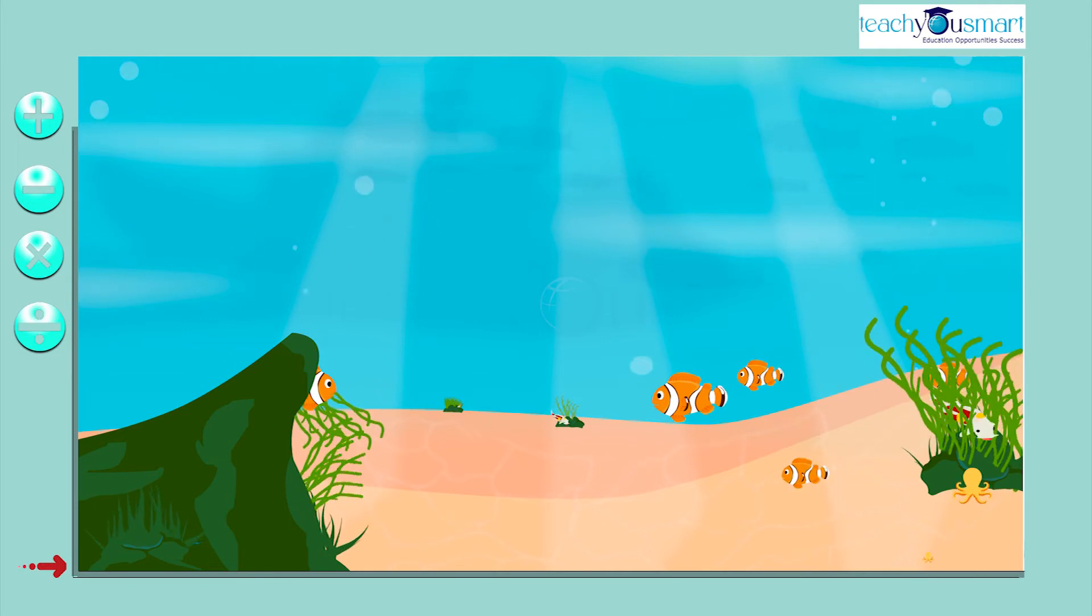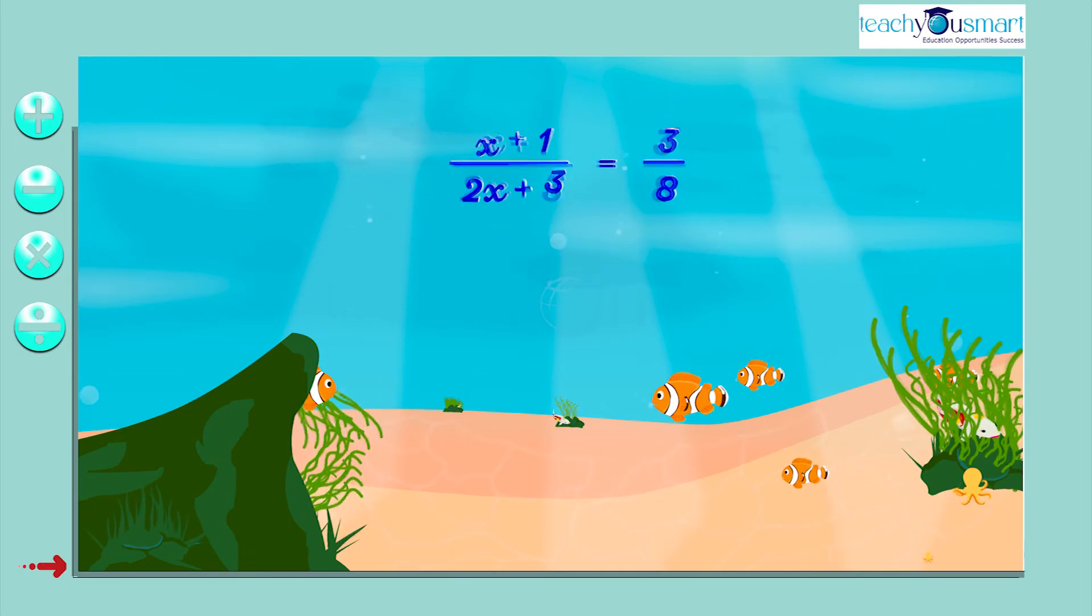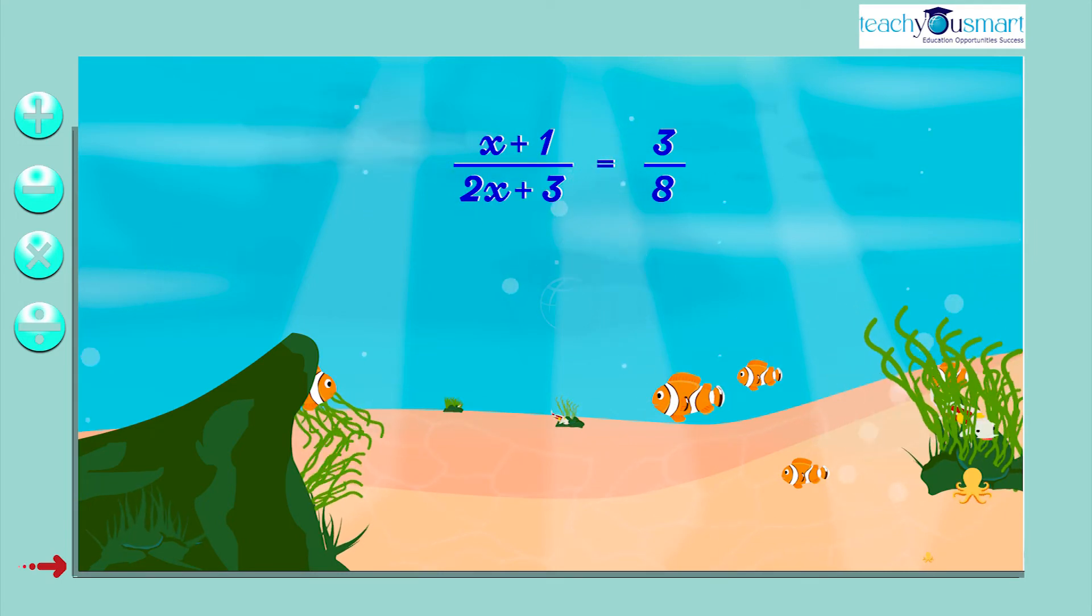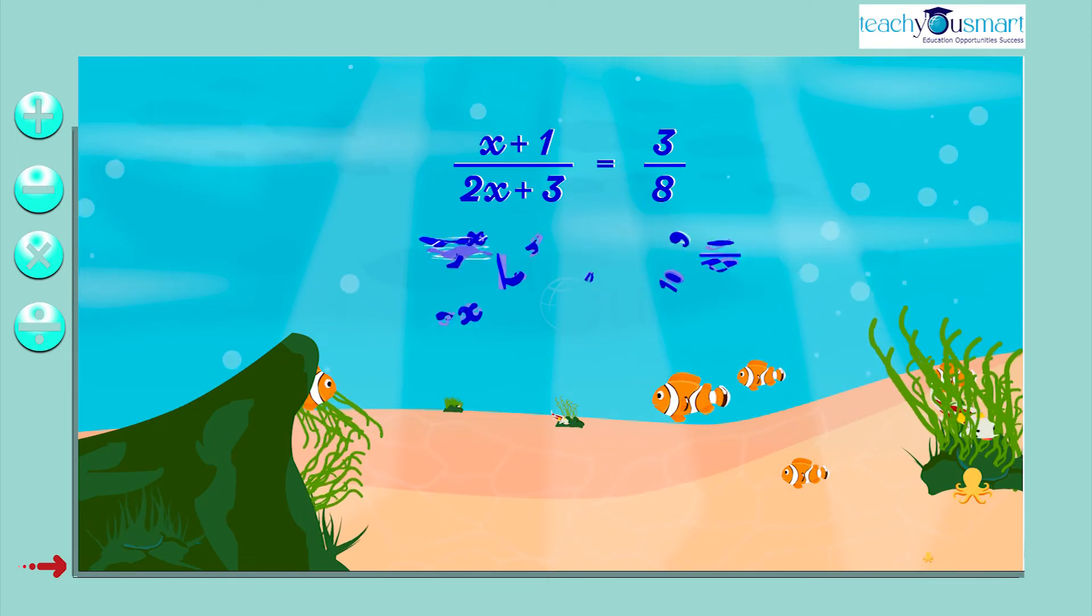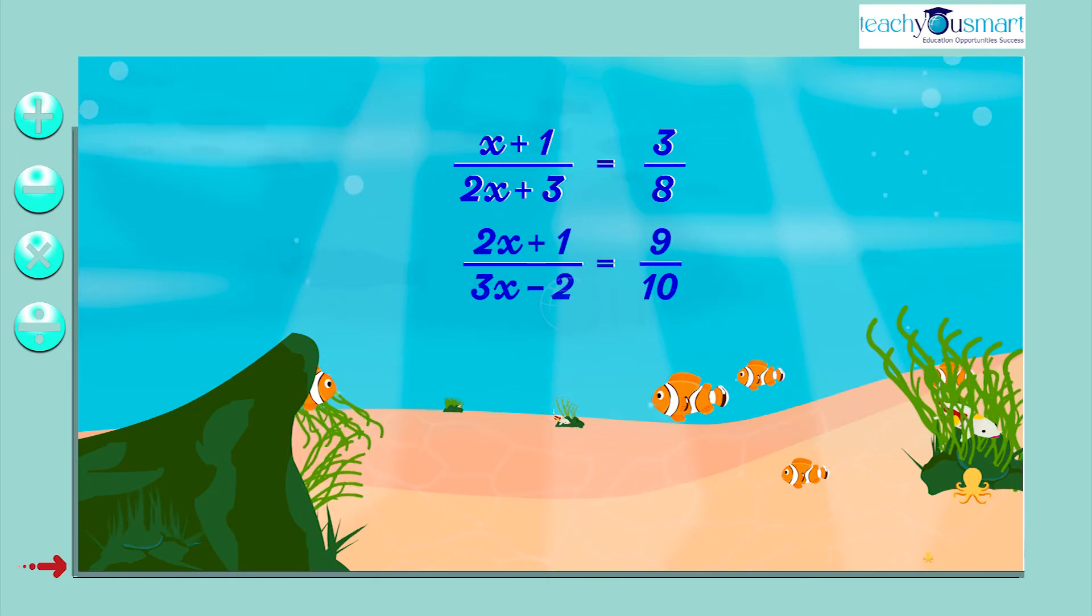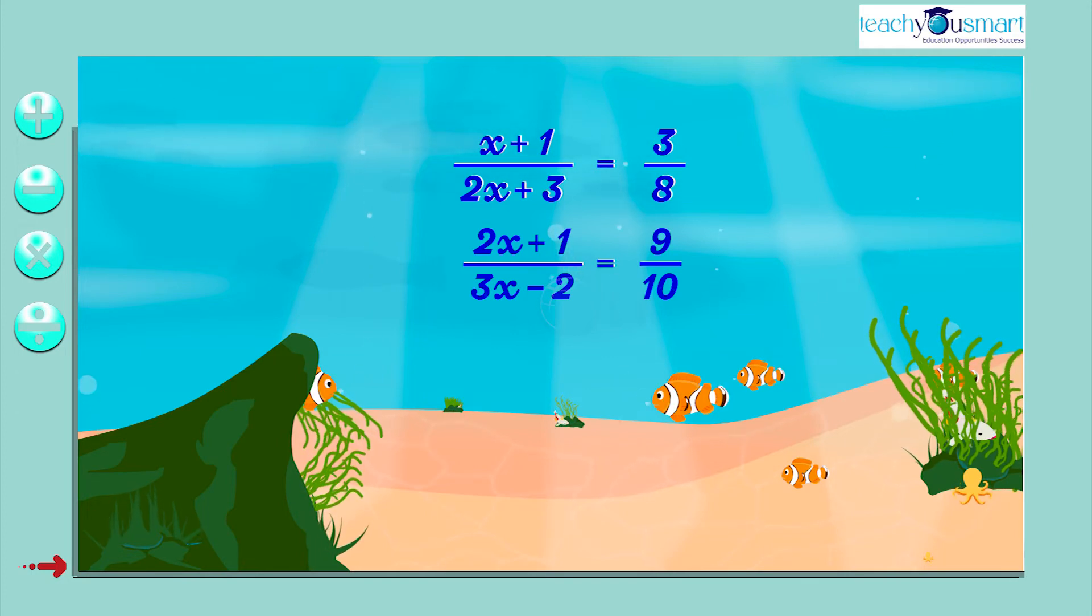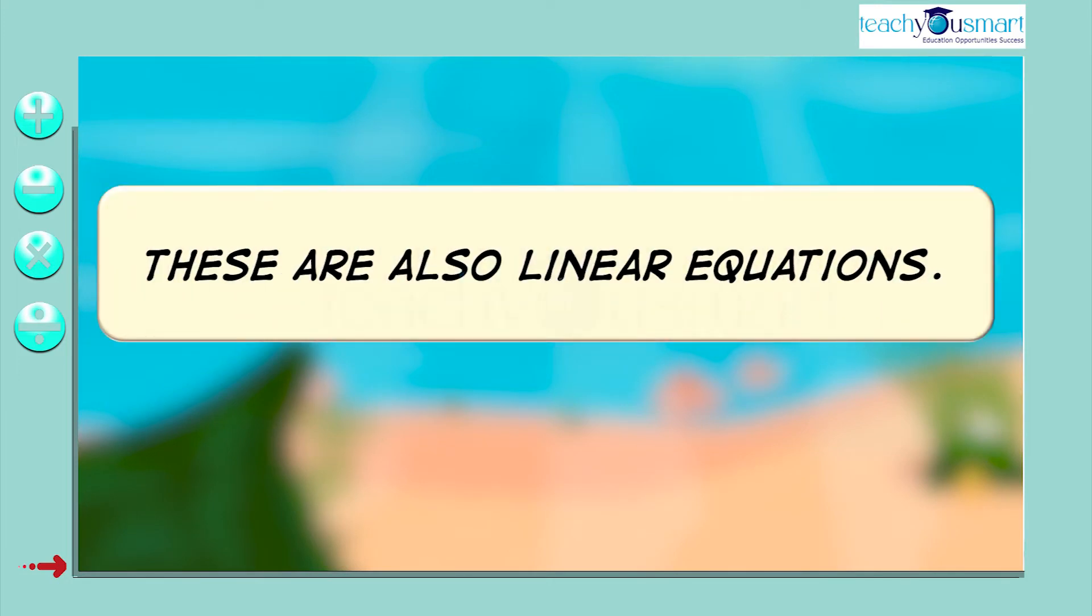But some other types of equations are these. For example, x plus 1 divided by 2x plus 3 equals 3 by 8, 2x plus 1 divided by 3x minus 2 equals 9 by 10. Are they linear? Yes, these are also linear equations.